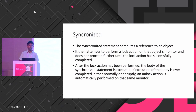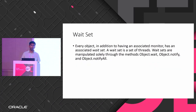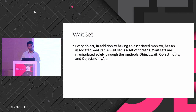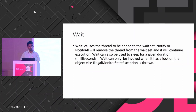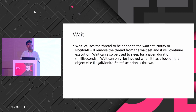Every object has a lock and also something called a wait set — a set of threads which are waiting on that particular lock or object. The wait set can be manipulated using the wait, notify, and notifyAll methods. When you call wait, it adds your particular thread to the wait set. Notify and notifyAll will remove the thread from that wait set.